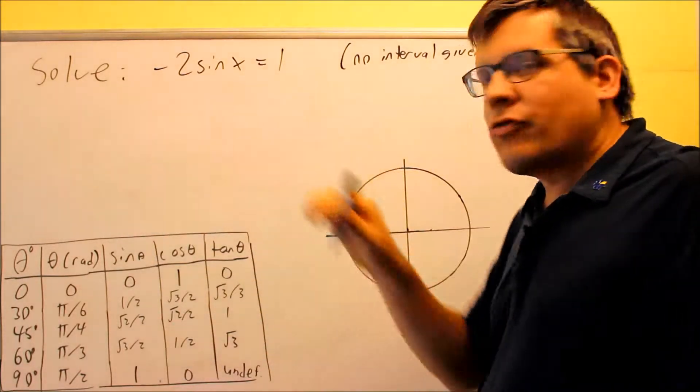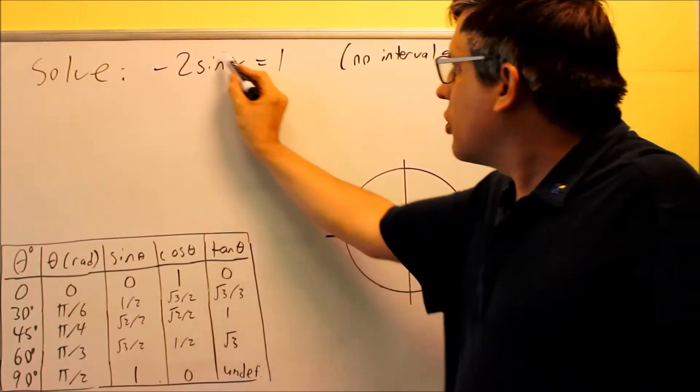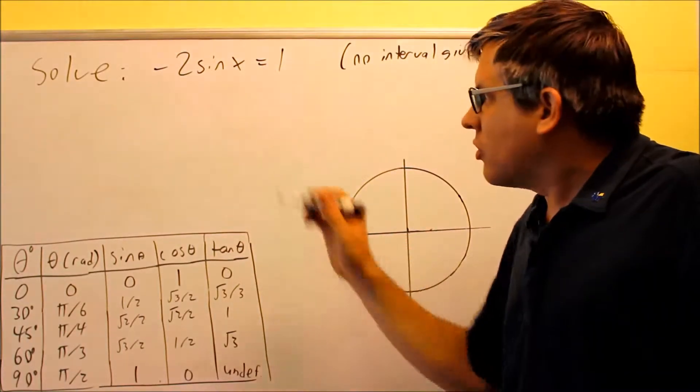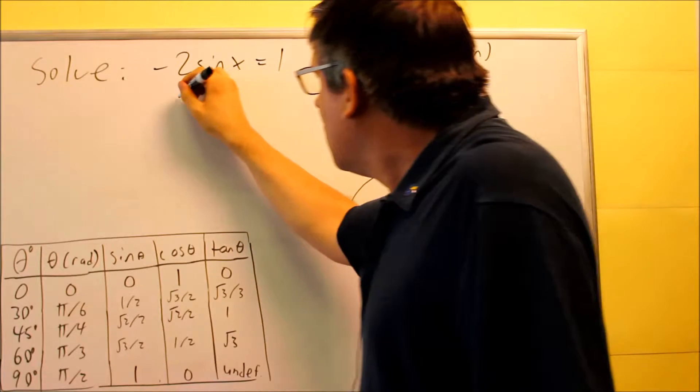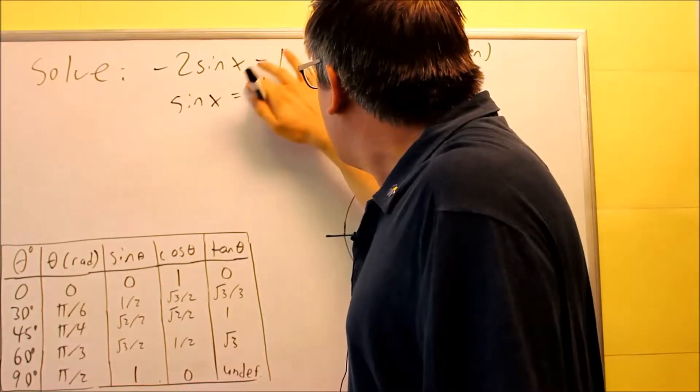Whenever you have a problem like this where the trig function is not already isolated, you want to do that first. We're going to treat the sine x as one variable. We're going to divide both sides by negative 2, and we get sine x equals negative 1 half.